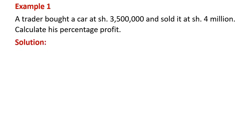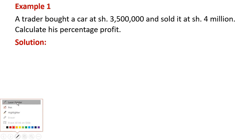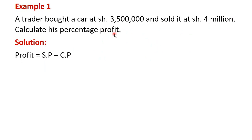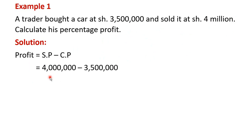Let's look at the solution. The cost price of the car is 3,500,000 shillings and the selling price is 4,000,000 shillings. So we want to get the percentage profit. First of all, let's calculate the profit. Profit is given by the selling price minus the cost price. When we substitute, we shall have 4,000,000 minus 3,500,000, and that will give us 500,000 shillings.